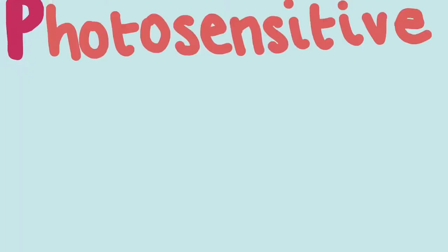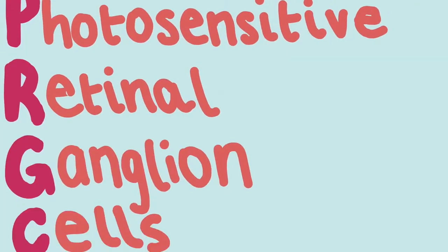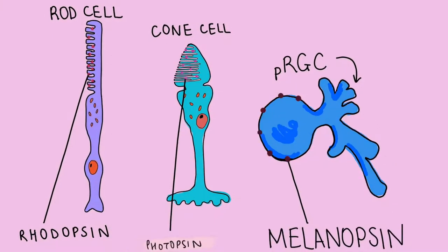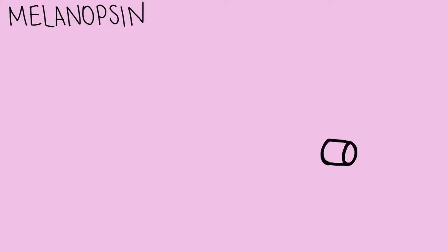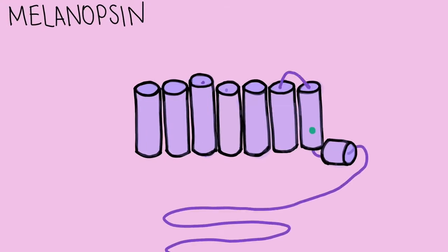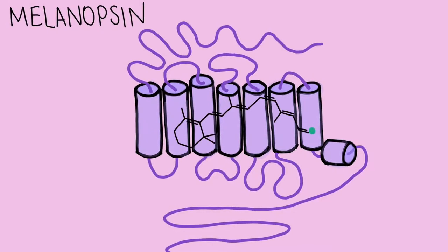These are photosensitive retinal ganglion cells. These contain a different photoreceptor than the other light sensitive cells in the retina called melanopsin. Melanopsin is a protein receptor that sits across the cell membrane and contains a pigment that is sensitive to light energy.